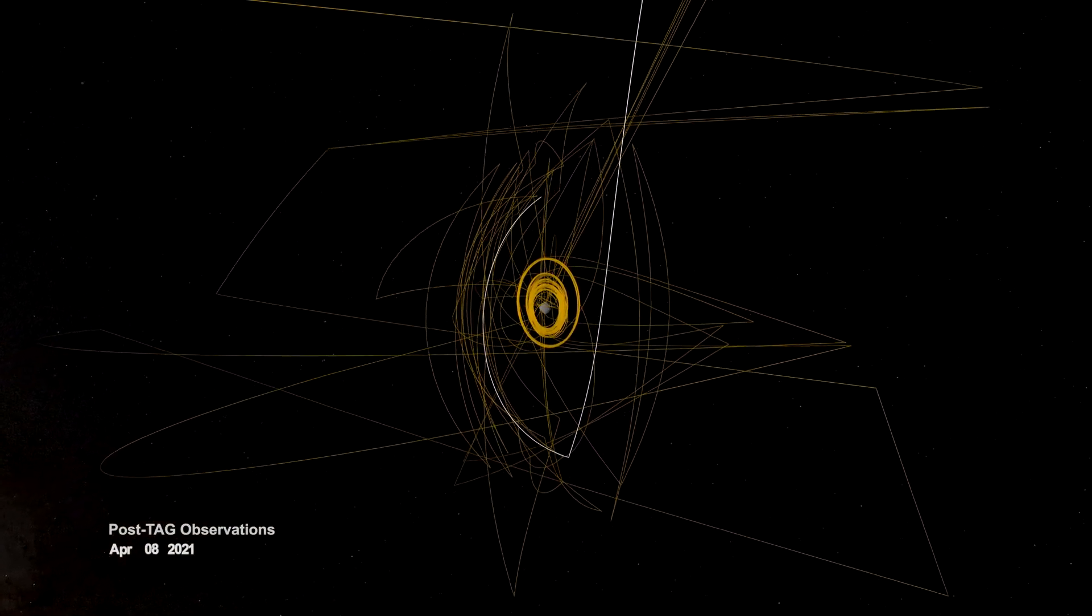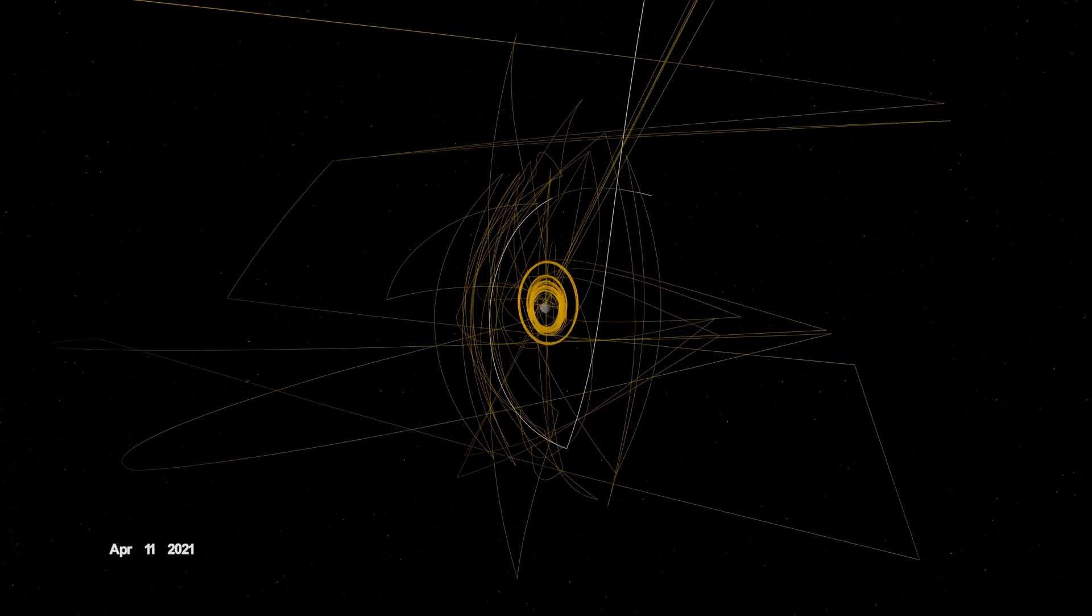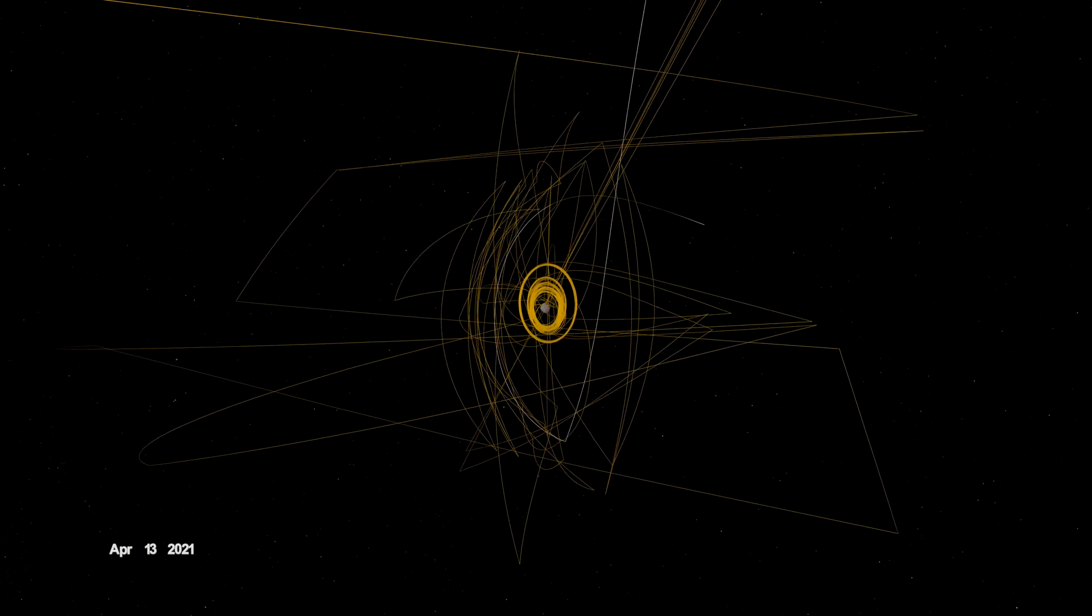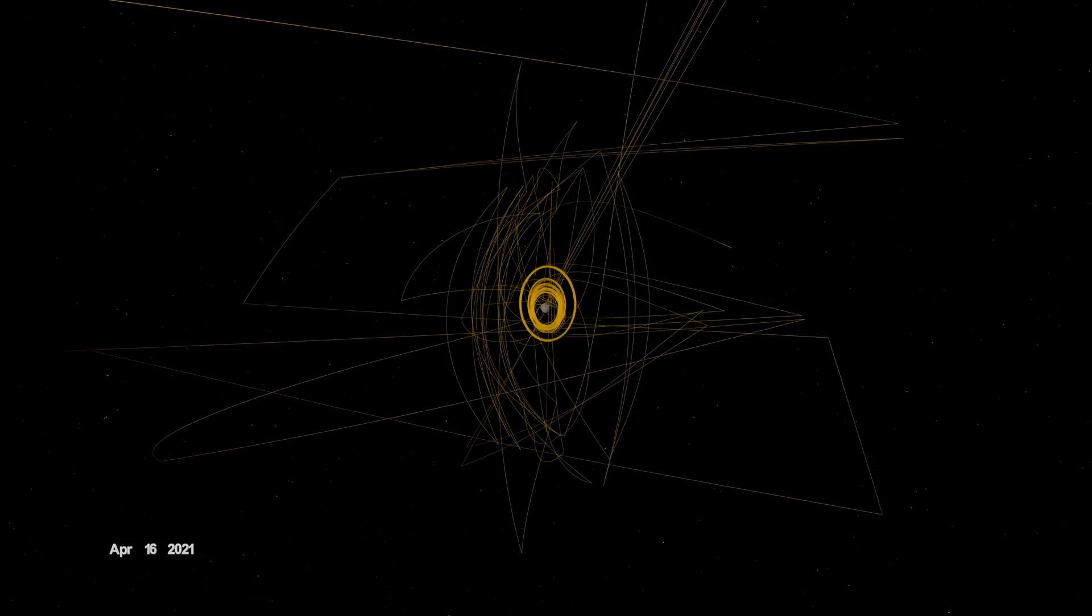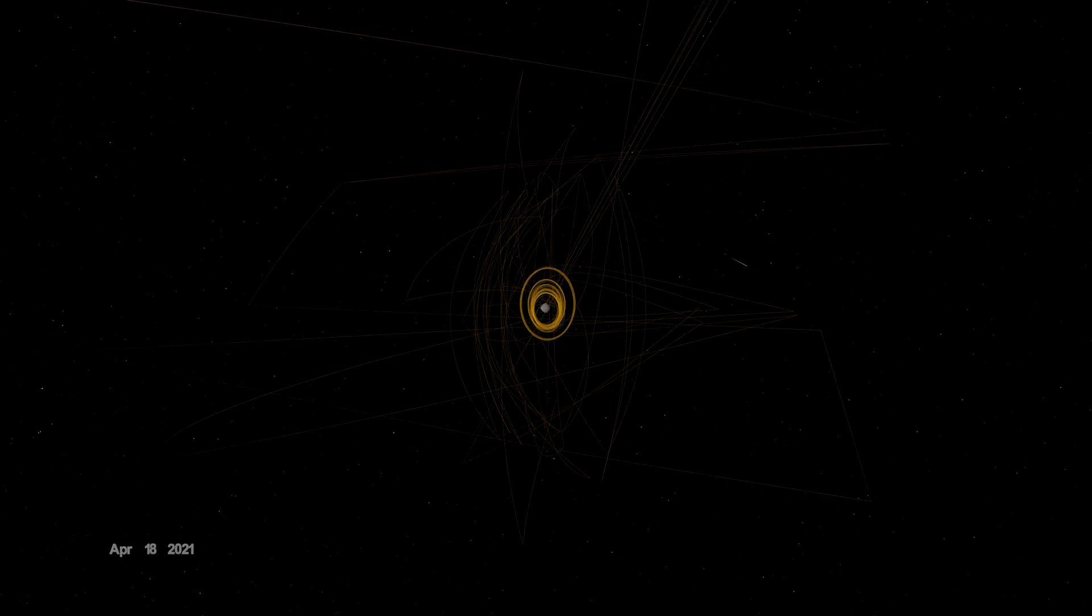Before departing Bennu, OSIRIS-REx was given one final task. On April 7th, it flew over Site Nightingale to observe how the sample collection event had changed the surface. And with that, OSIRIS-REx had recorded its mark on Bennu and spun the last strand of its web.